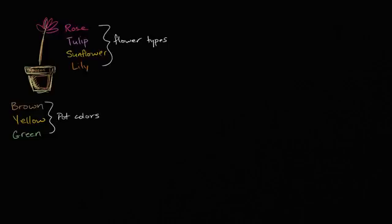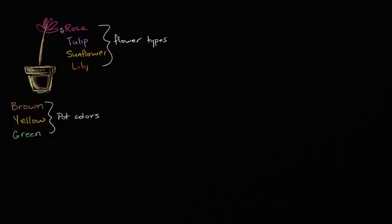So you're at a florist store, and you're interested in buying some type of a potted flower. And you ask the florist, what type of flowers do you sell? And he says, well, we sell four types of flowers. We sell roses, tulips, sunflowers, and lilies.